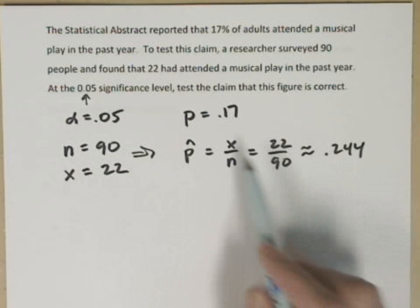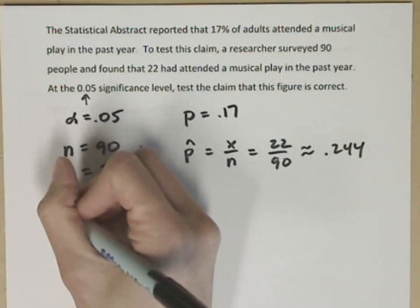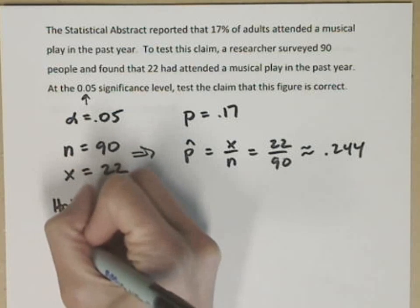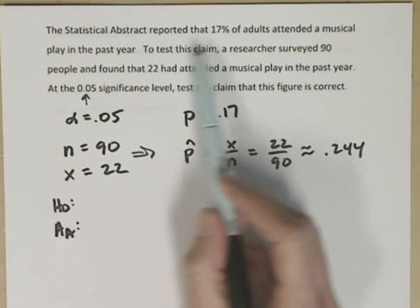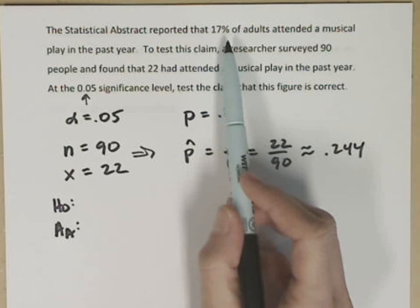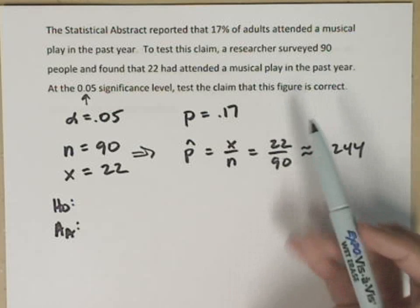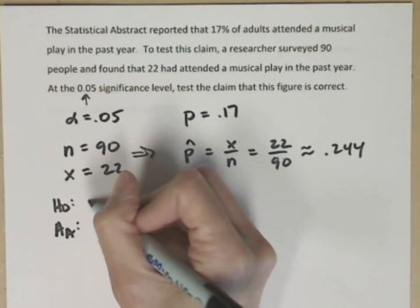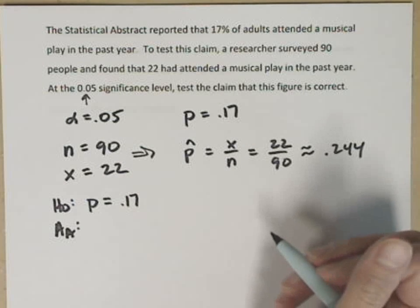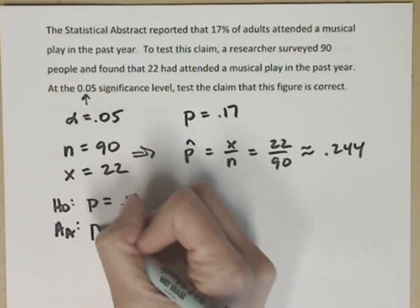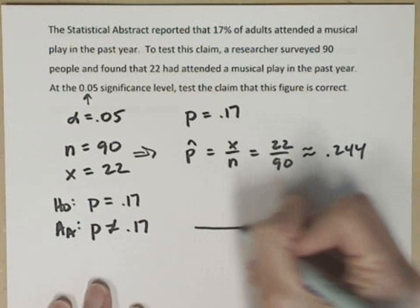I need to start with my hypotheses, null hypothesis and alternative hypothesis. It says that we're reporting 17%, and the question says, is the figure correct? Well, it either is or it isn't. So I'm going to say that P equals .17 for my null. Automatically, my alternative hypothesis is not equals .17. This gives me a two-tail test.